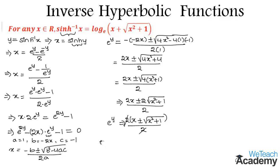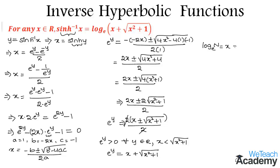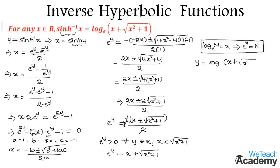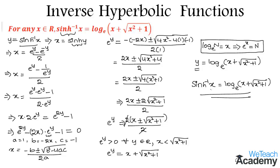We already know that e power y is greater than 0 for all y belongs to R, and x is less than under root x squared plus 1. Hence we can say the root of e power y is equal to x plus under root x squared plus 1. Using the definition of logarithms — log n to the base e equals x implies e power x equals n — we get y equal to log of x plus under root x squared plus 1, to the base e. And since y is inverse hyperbolic sin x, we have proved that inverse hyperbolic sin x equals log of (x plus under root x squared plus 1) to the base e.